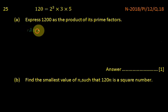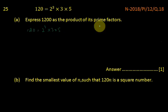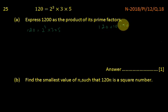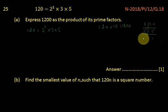120 can be written as 2 cubed multiplied by 3 multiplied by 5. When we multiply 120 by 10, it will become 1200. We just find the prime factors of 10. 2 multiplied by 5 equals 10, so the factors of 10 are 2 multiplied by 5.